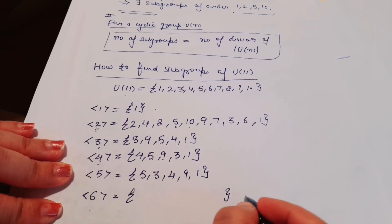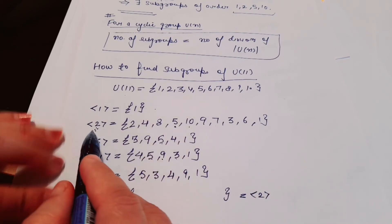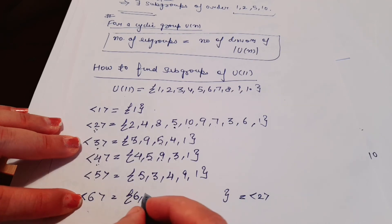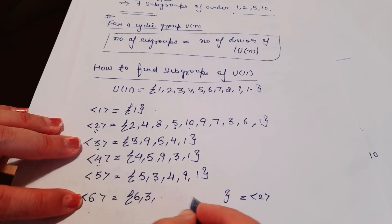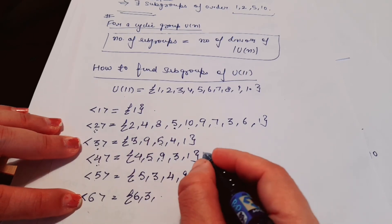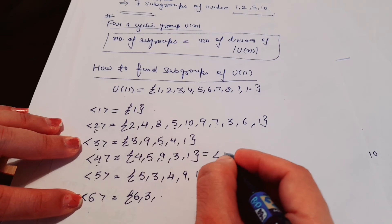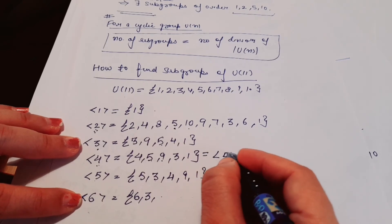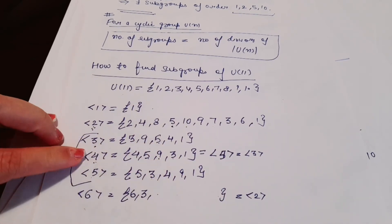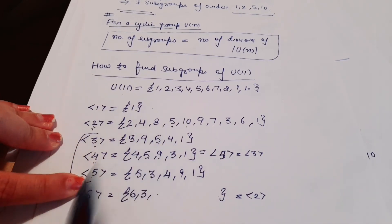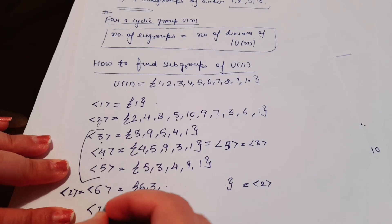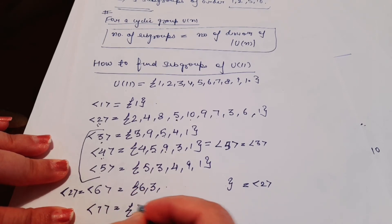The subgroup generated by 6: calculating 6^1 = 6, 6^2 = 36 → remainder 3, and continuing gives all 10 elements, so ⟨6⟩ equals ⟨2⟩. We can observe that ⟨3⟩ = ⟨4⟩ = ⟨5⟩, and ⟨2⟩ = ⟨6⟩.